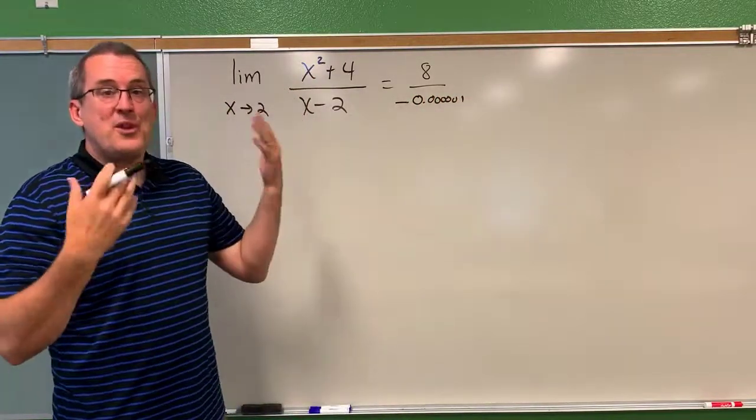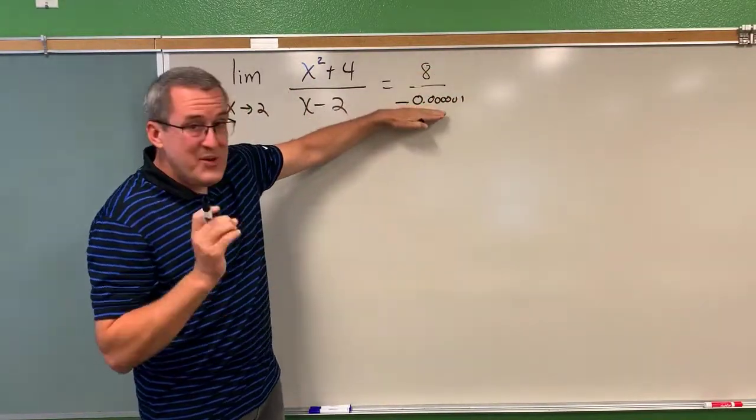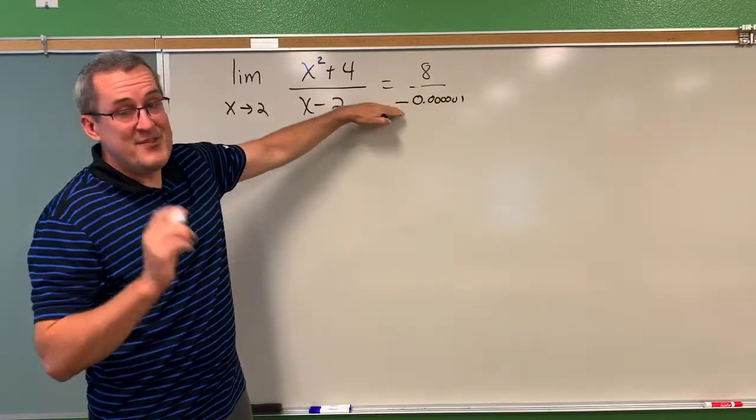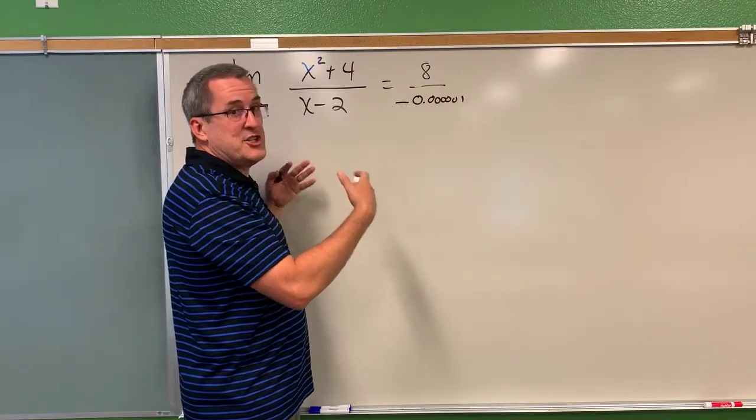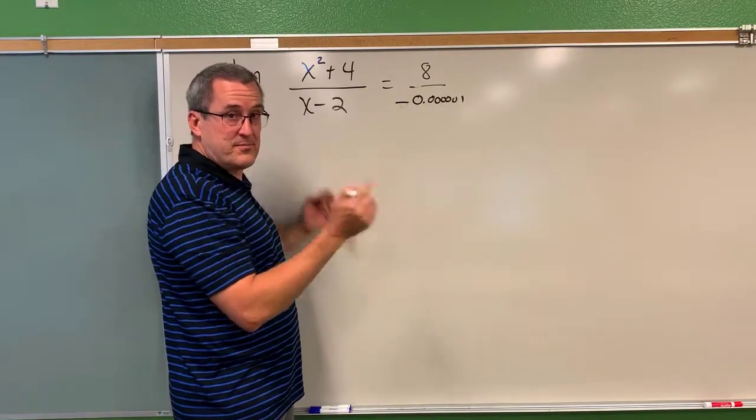Now in this case, when you divide 8 divided by that really small negative, nearby to 0 but negative quantity, the result is going to be very very very large negative. So here's what we do.